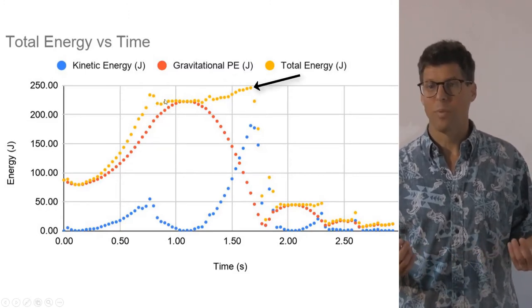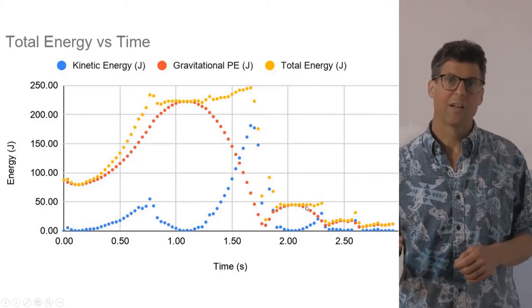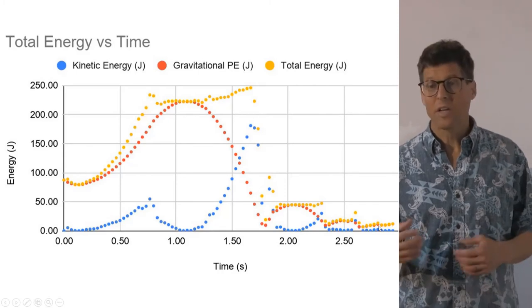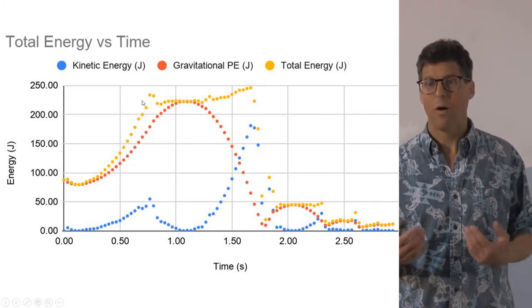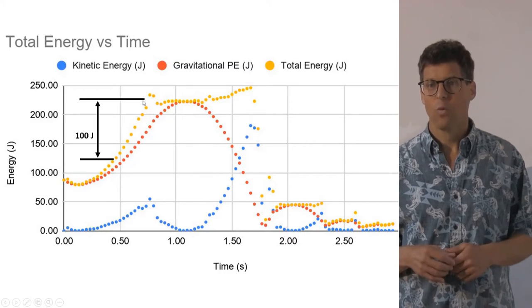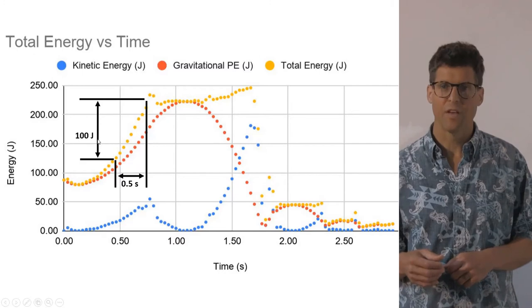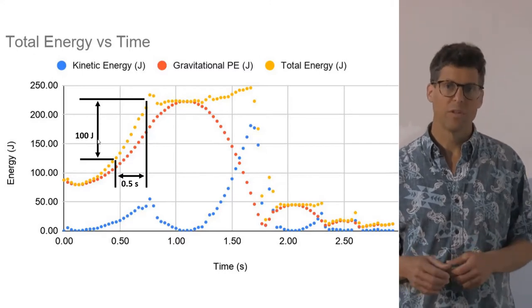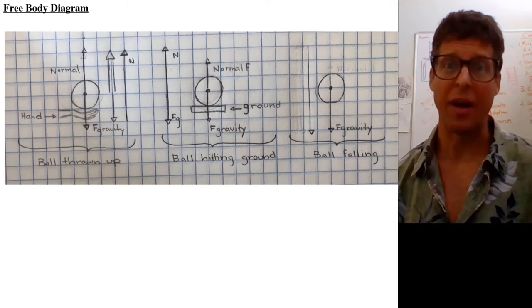We can add these two together to get the total mechanical energy of the system. And what we see is when the ball is in the air, the total energy is largely constant, but at a lower level for each subsequent bounce. Work is done on the system when he's throwing it into the air. And so the power is going to be the slope of this line where we see the ball gains approximately 100 joules of energy in half a second for a power of approximately 200 watts. And we can analyze the forces with a free body diagram.